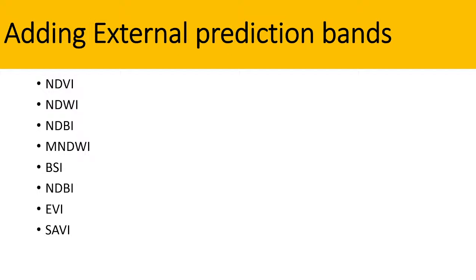But when you want to add external prediction bands such as NDVI, NDWI, MNDWI, BSI, or EVI, your dataset will be more powerful. For example, if you want to classify agricultural land and vegetation, NDVI values can better distinguish agricultural land from normal vegetation. All of those indices help us easily distinguish specific features on the surface. That is why adding external bands is one method for improving your land use land cover accuracy.